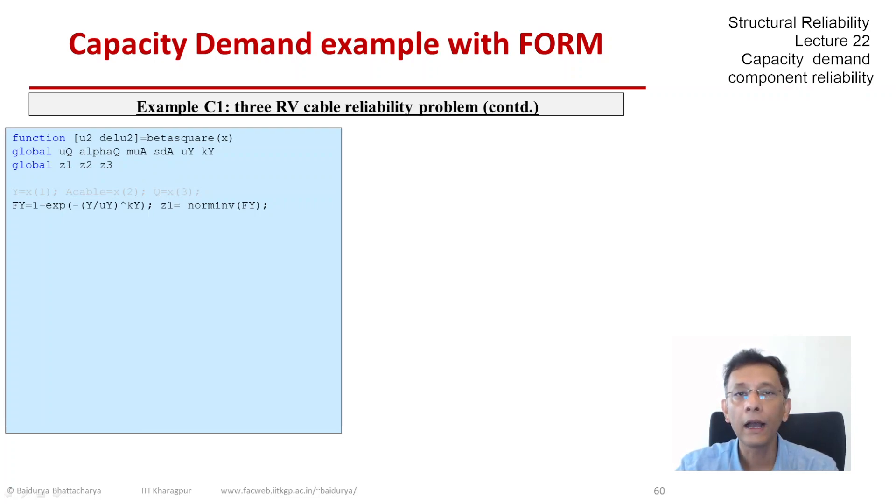Once for y I get the CDF, then I can do the normal inverse. So z1 is norm inv of f y. There I am calling another function, a library function in MATLAB which inverts the normal CDF. z2 is easy because it's a normal to normal transformation. Likewise for q, I get z3 through the normal inverse. And then the objective function is the square of the distance: z1 square plus z2 square plus z3 square.